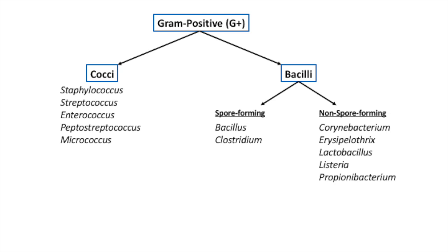We start first with the gram-positive bacteria, and here you can see that they are divided into cocci and bacilli. Under the cocci we have Staphylococcus, Streptococcus, Enterococcus, Peptostreptococcus, and Micrococcus.